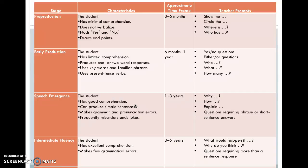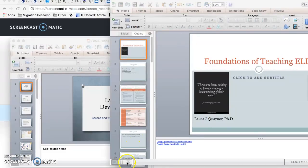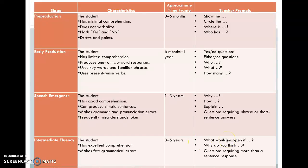In the speech emergent stage, the student has good comprehension and can produce simple sentences, and the teacher starts asking why and how questions and asking students to explain things. In the intermediate fluency stage, with really good comprehension, the teacher can ask questions like 'what would happen if' or 'why do you think,' requiring more than a sentence response. The next stage is advanced fluency, where the student has a near-native level of speech — typically five to seven years — and those are more open-ended questions.